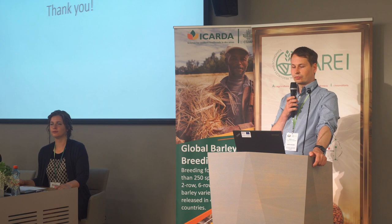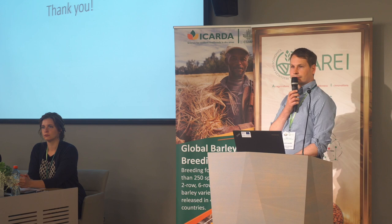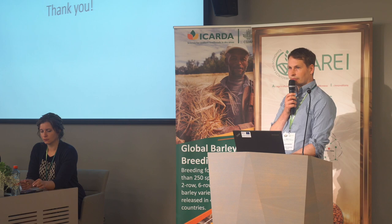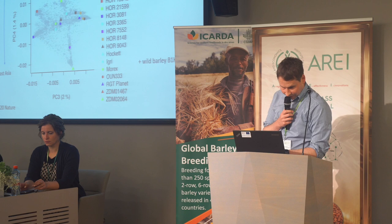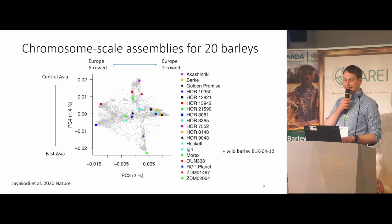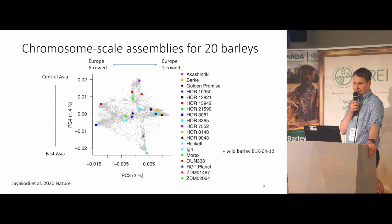Question from the audience: In the global diversity analysis, Ethiopian barley appeared unique, but in the pan genome there seemed to be no representative from that gene pool. Response: We do have one Ethiopian barley in the first version of the barley pan genome, and we selected another for the second version. We know Ethiopian barley is special and try to include it.